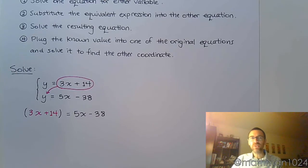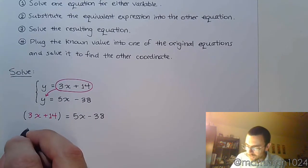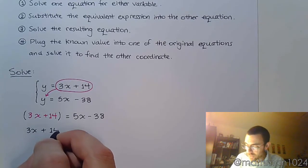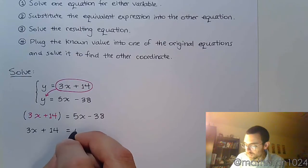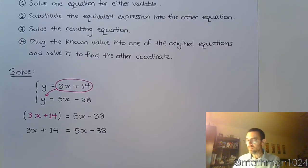Once I have this, this is just a nice linear equation for us to solve. Here I don't really need the parentheses because it wasn't like there was a coefficient that I had to worry about. So it's just 3x plus 14 is equal to 5x minus 38.